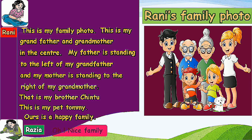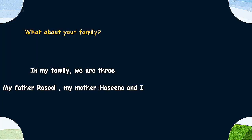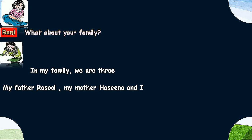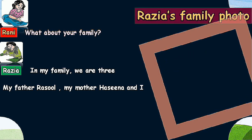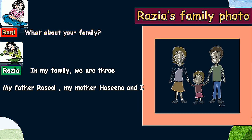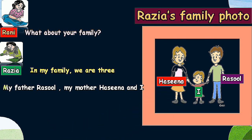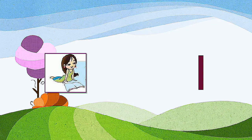Rajiya: Oh, nice family! Then Rani asked Rajiya, what about your family? Rajiya replied: in my family we are three — my father Rasul, my mother Hasina, and I.